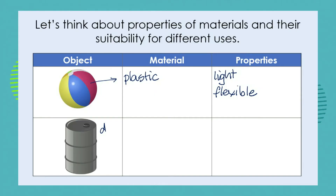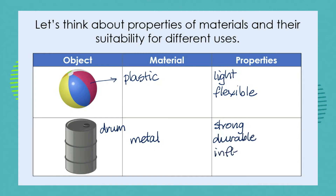What about this metal drum? It is made out of metal, and as we've examined with the pot, metal makes it strong, durable, and inflexible. But all of these characteristics make it suitable for its function of storing liquids. Very often those liquids might be dangerous and can't contaminate the environment, so we need to know that anything stored in a metal barrel is going to be safe and secure inside.